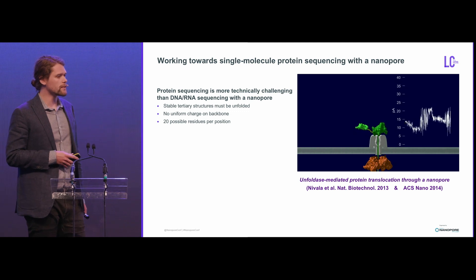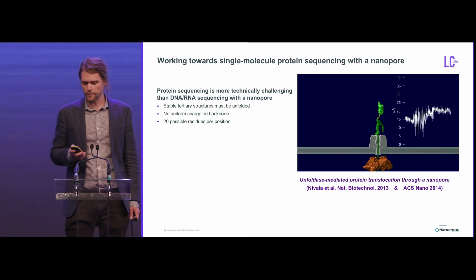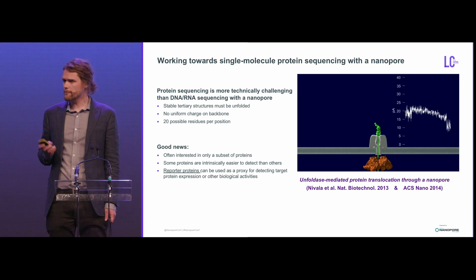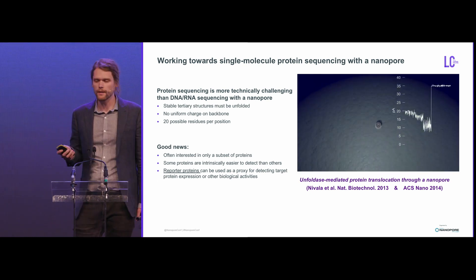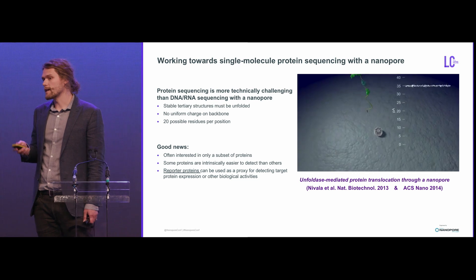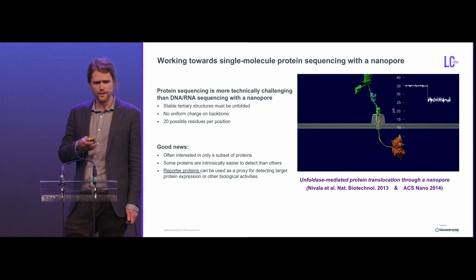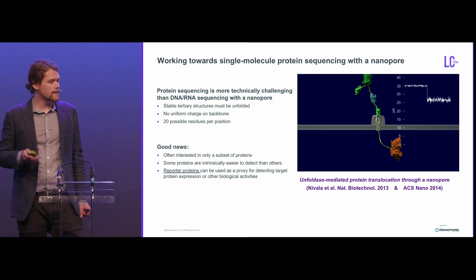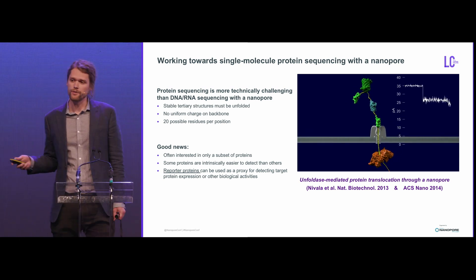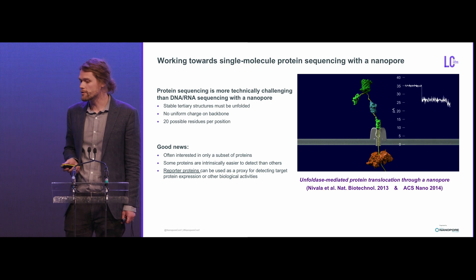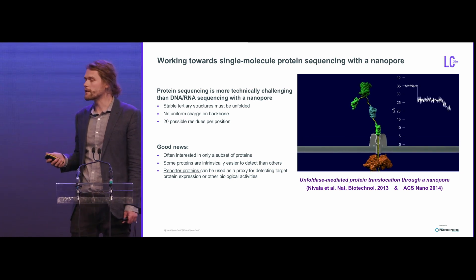Protein sequencing using nanopores is much more technically challenging for a lot of reasons. But the good news is, if you're interested in studying proteins, you might only be interested in studying a subset of different proteins. Some proteins are easier to detect and analyze than others, and you can also tag and engineer proteins to be easier to detect. This is where the concept of reporter proteins and reporter tags come in.